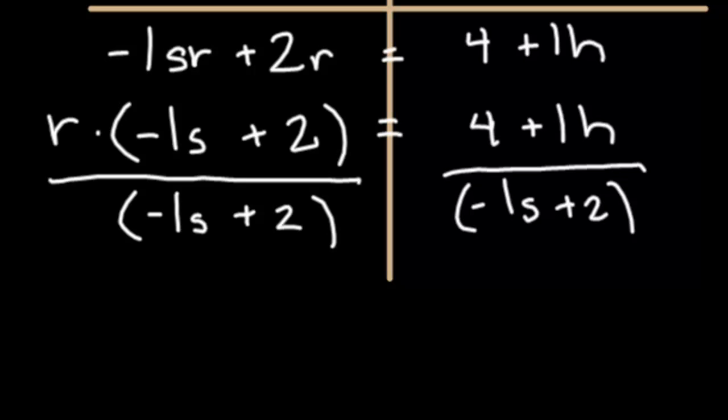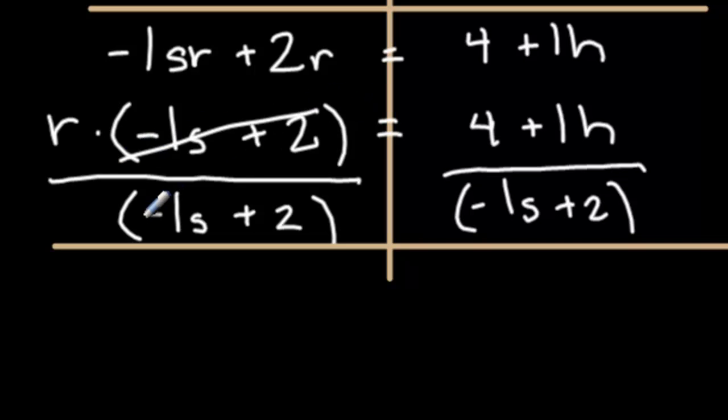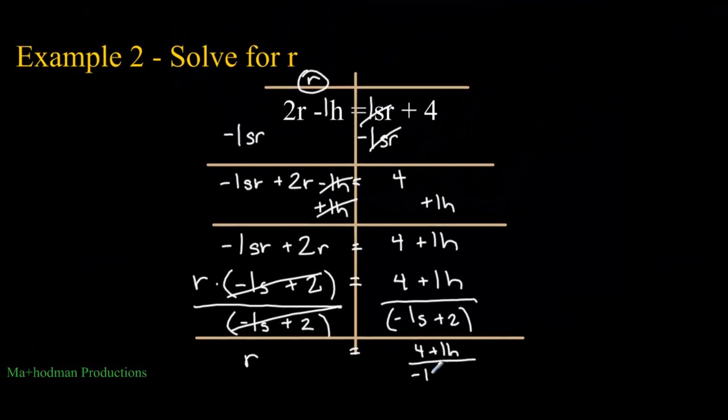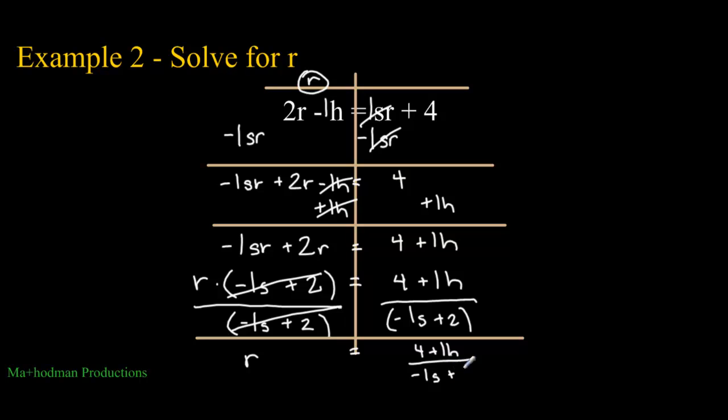Wow, this problem is getting too long. It looks like an English paper. However, we're almost done from here, so hang on. Don't start falling asleep on me. The negative 1s plus 2s, they cancel out. The r just drops straight down. And I can't do anything to simplify this, so you just have to rewrite it. 4 plus 1h over negative 1s, or negative s if you don't want to write that 1, plus 2.